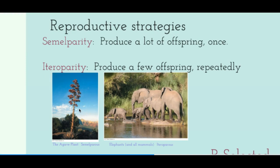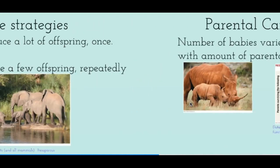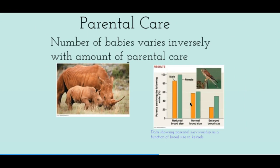The opposite strategy is iteroparity, where an organism reproduces multiple times throughout its lifetime. Usually when an organism does this it produces fewer offspring, but the important part is that reproduction happens repeatedly throughout the organism's life. An example is elephants. It all comes down to a trade-off between the number of offspring and the energy invested.